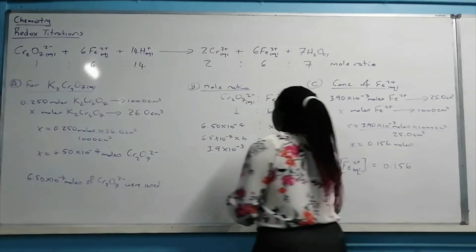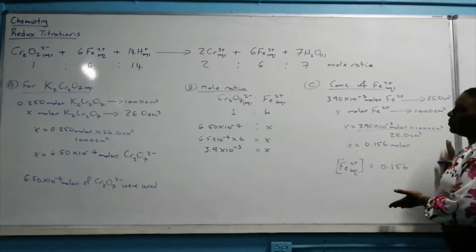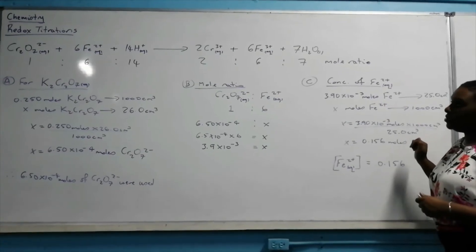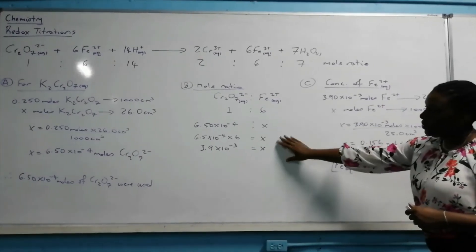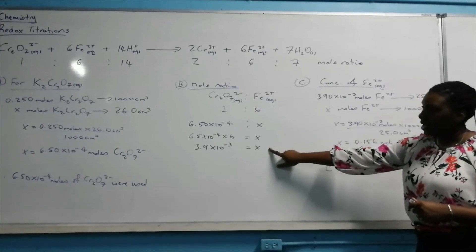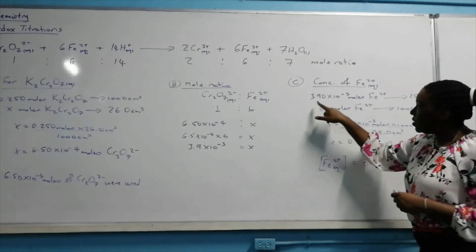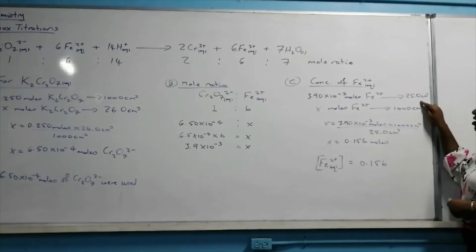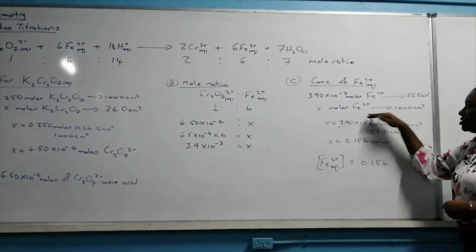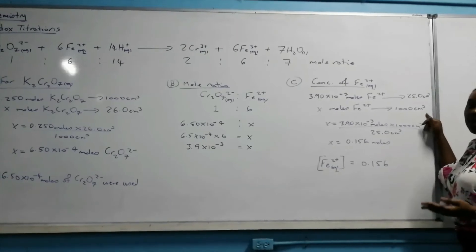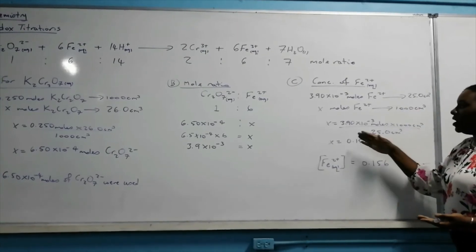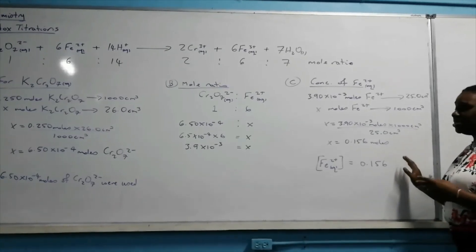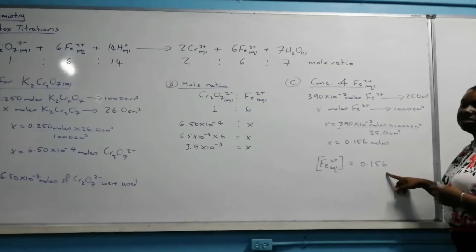Now let me explain what is going on here. To find the concentration of the Fe²⁺ solution that was used: based on the mole ratio, we calculated 3.90 × 10⁻³ moles of Fe²⁺ present in 25.0 cm³. To find how many moles are present in 1000 cm³, we cross multiply and solve for X. The concentration of the Fe²⁺ solution is therefore 0.156 mol/dm³.